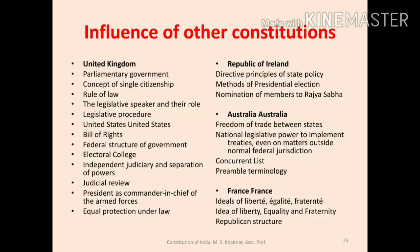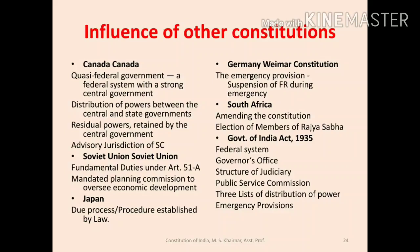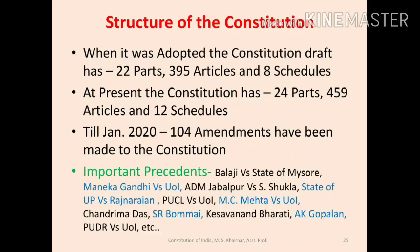While making the constitution, Sir B.N. Rao, Dr. B.R. Ambedkar, and other members studied constitutions of other systems, and these have reflected in the making of the constitution of India. The constitutions of the UK, Ireland, Australia, France, Canada, Germany, South Africa, Japan, the Soviet Union, and the Government of India Act 1935 had their influence on the constitution of India. At the time of adoption, the constitution had 22 parts divided into 395 articles and 8 schedules.